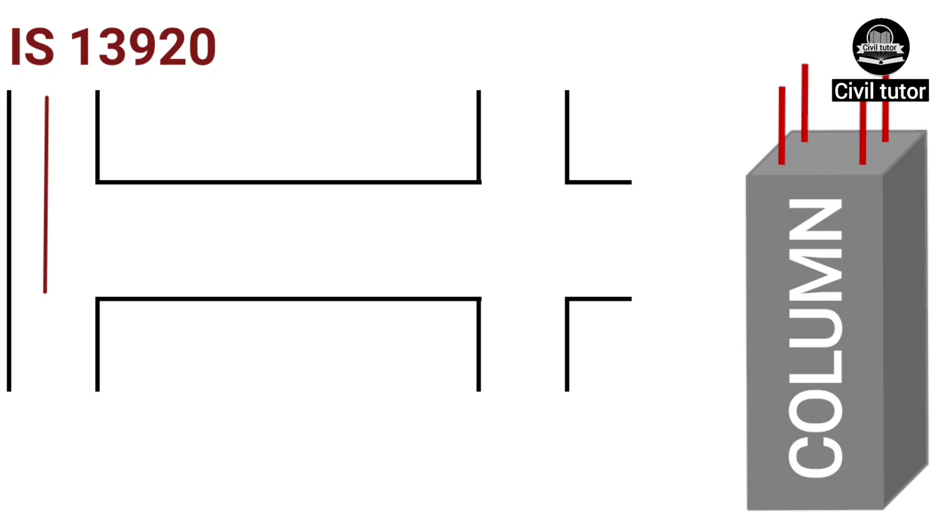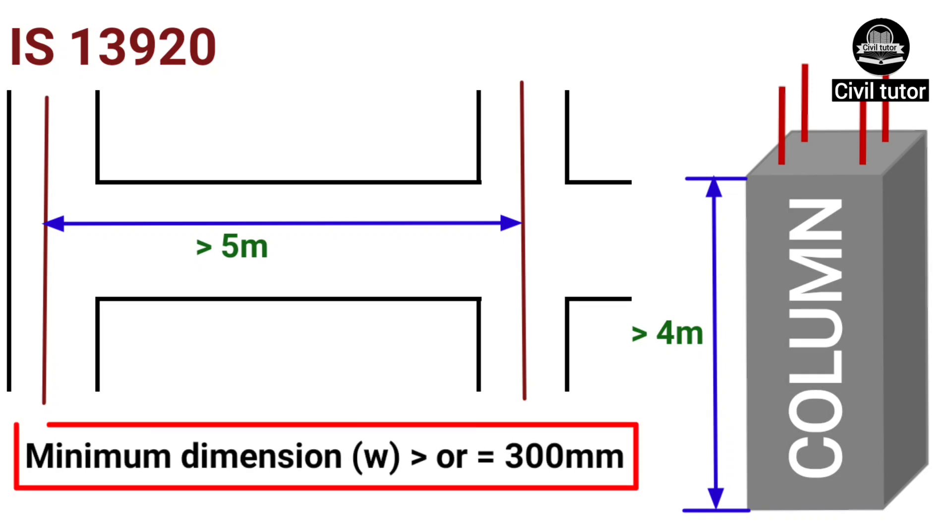However, in frames that have beams with a centre to centre span exceeding 5 m or columns of unsupported length exceeding 4 m, the shortest dimension of the column shall not be less than 300 mm.